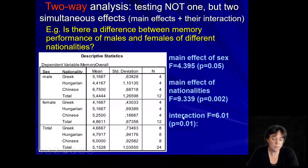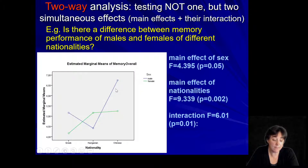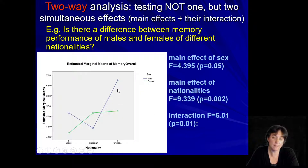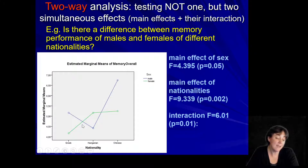Looking at the means it's quite difficult to interpret, so I always urge you to look at the graph. If you check males and females and average out the points, you can see that males are better than females in general — but it's just a tendency. We do have a significant main effect of nationality. We can see that Chinese are better and Hungarians and Greeks are lower. And we see a beautiful interaction: it's Chinese males that are the best and Greek females that are the worst, with Hungarian males also quite low and the rest at about the same level.